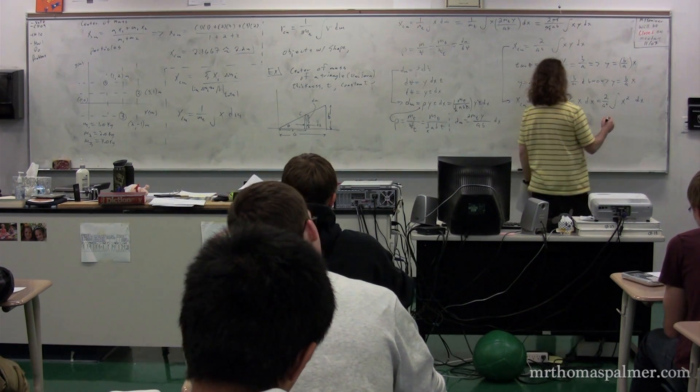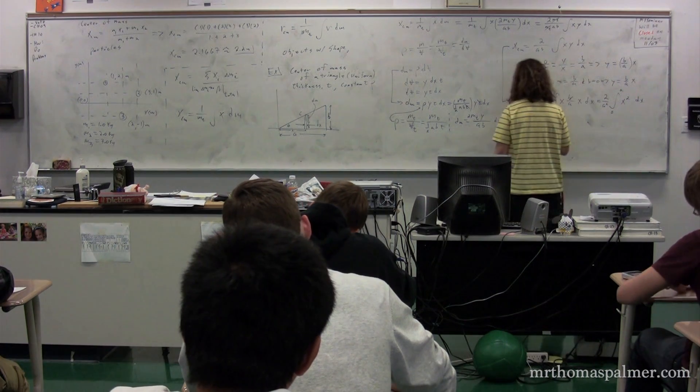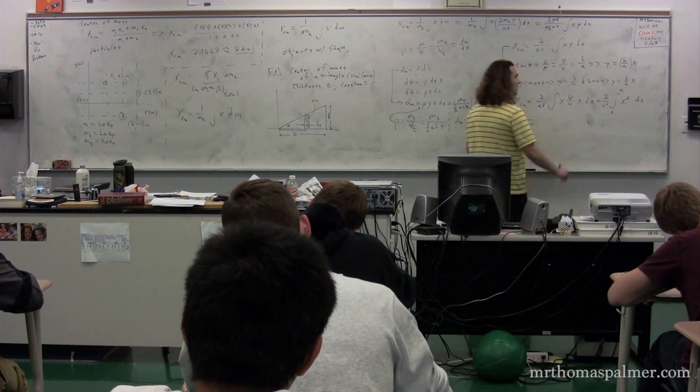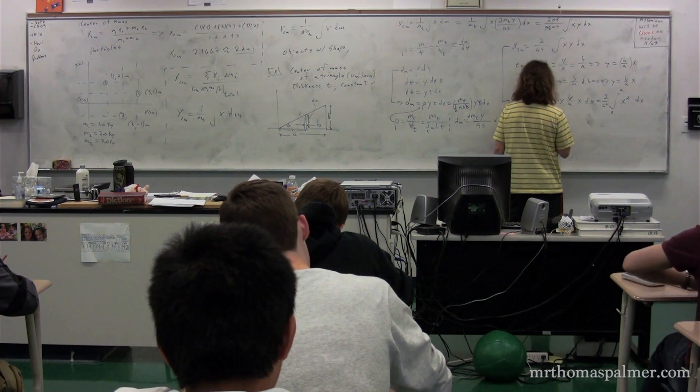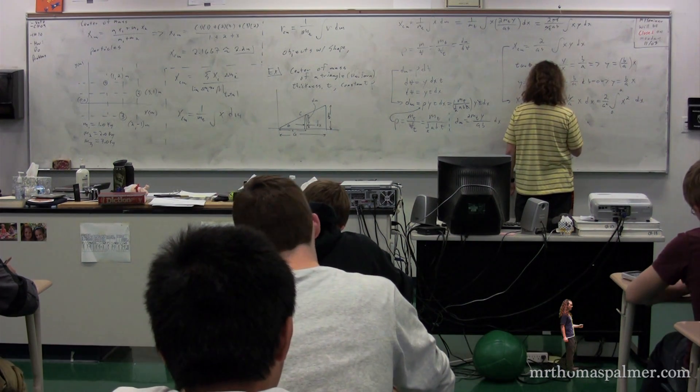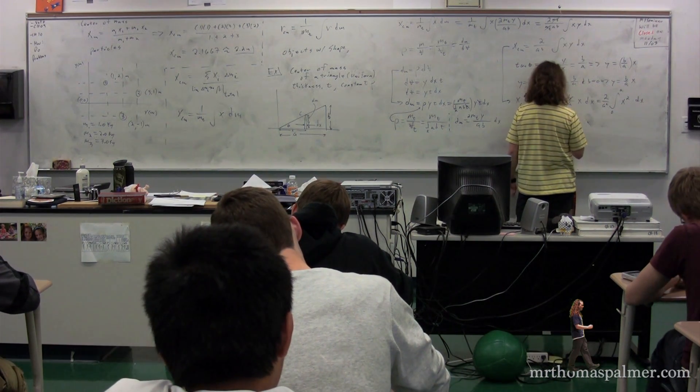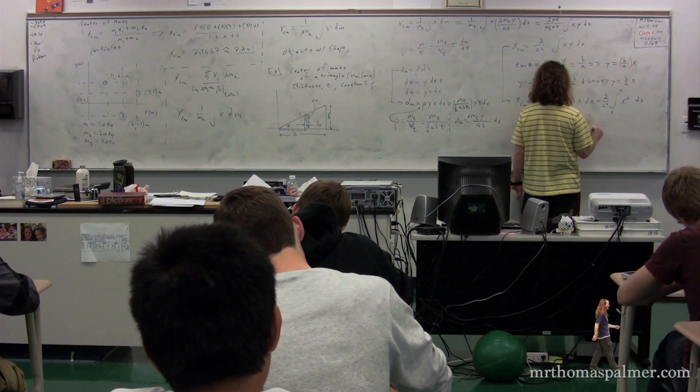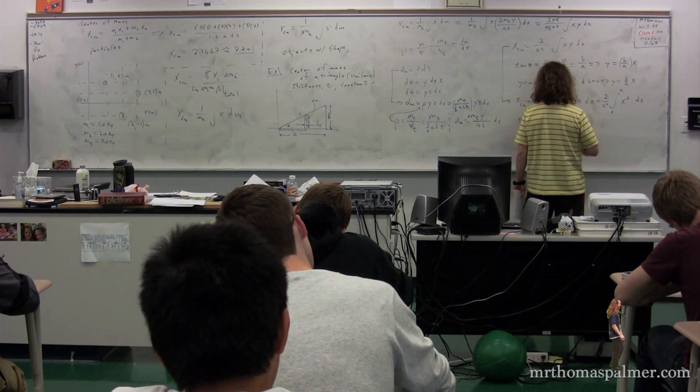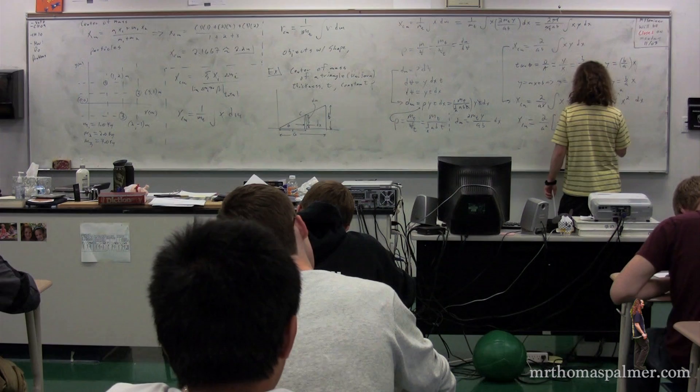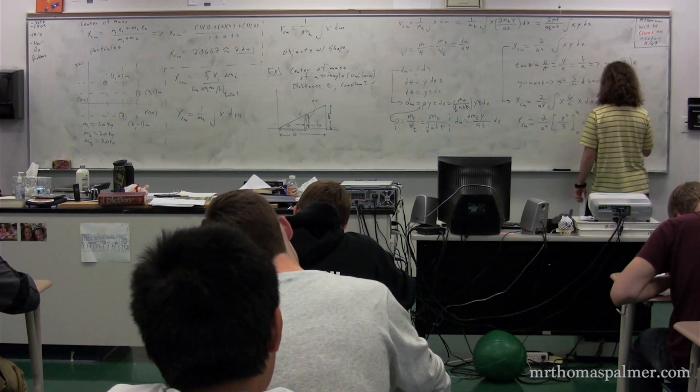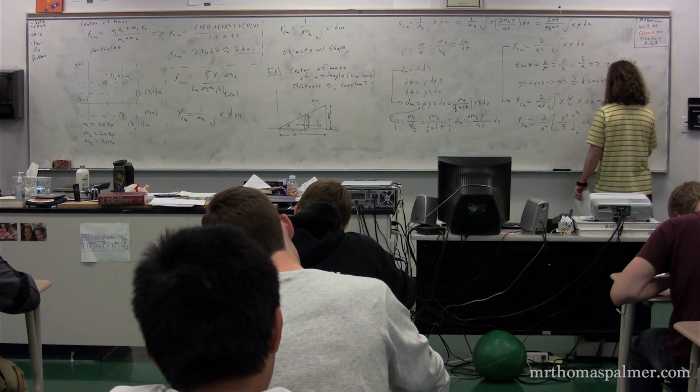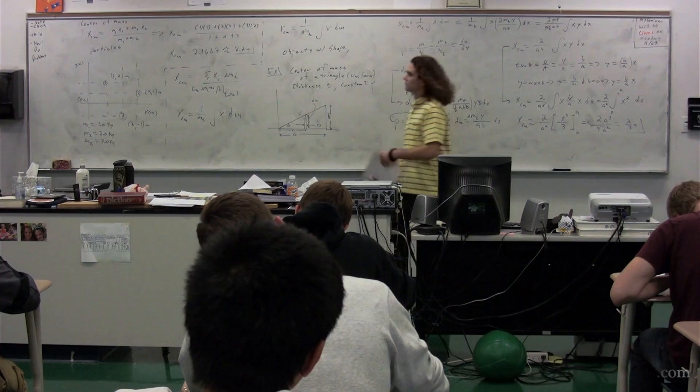So the integral is from zero to a. So the x center of mass, if we take the integral of this, we get two over a squared times x cubed over three from zero to a. In other words, two times a cubed over three times a squared or two-thirds a.